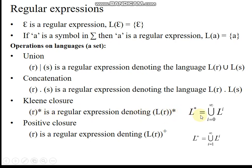Kleene closure — written as 'a*' — means the string length ranges from i equals zero to infinity, so the language includes strings of length zero (the empty string, epsilon) up to infinity. Positive closure means the minimum string length is one — from one to infinity — so positive closure does not allow the empty string in the language.